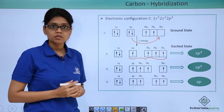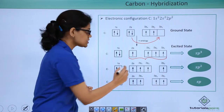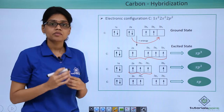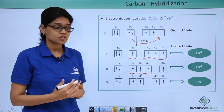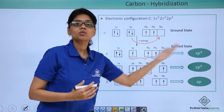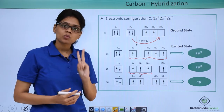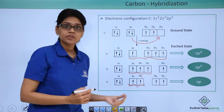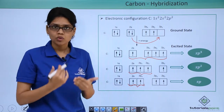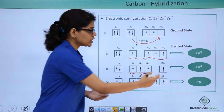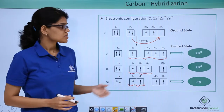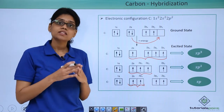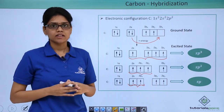Now if the 2s orbital mixes with two 2p orbitals — 2s, 2px, and 2py — and one 2pz orbital is not involved in hybridization, then you have sp2 hybrid orbitals. And if 1s and 1p combine, with the remaining 2p orbitals not involved in hybridization, you get sp hybrid orbitals. Let us now study in detail the different hybrid states, their structures, and the bond angles involved.